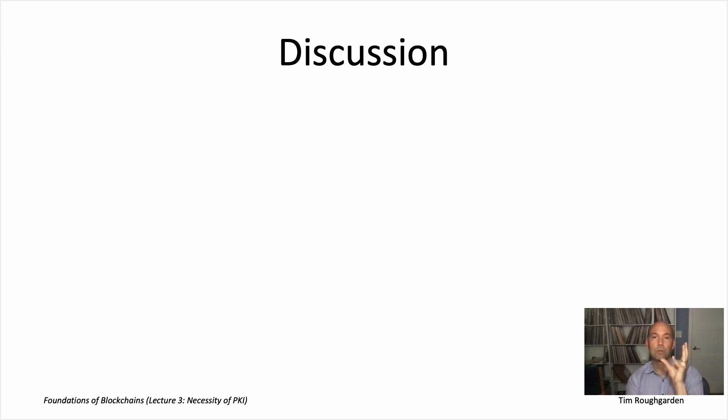the main result was a possibility result. We gave the Dolev-Strong protocol, which was a solution to Byzantine broadcast satisfying validity and agreement. And if you remember, at the very end of lecture two, we emphasized that Dolev-Strong satisfies validity and agreement no matter what little f is, no matter how many Byzantine nodes there are.